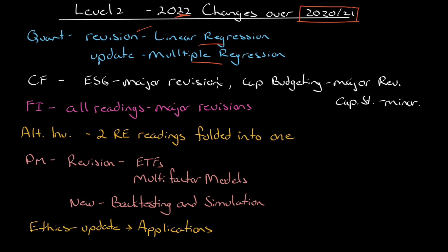Dropped is the last reading in quant, which was excerpts from probabilistic approaches — that has been dropped. Going into corporate finance, the reading on ESG has had a major revision. Same with capital budgeting, and capital structure has had a minor revision — just a sort of repositioning of how we look at decisions that are being made. Fixed income: all readings have had a major revision.